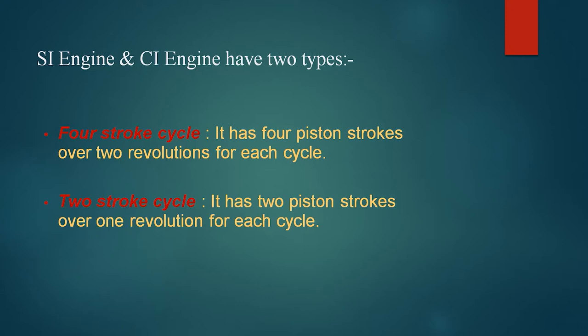You might have heard about four-stroke engine and two-stroke engine. A four-stroke cycle has four steps to complete one cycle, meaning it has four piston strokes over two revolutions per cycle. To complete one cycle, the piston has to move four times, so it is called a four-stroke engine. When the piston moves up and down four times, it completes two revolutions.